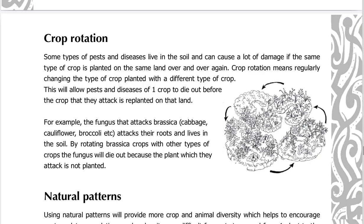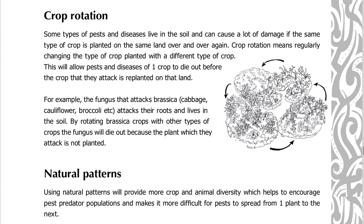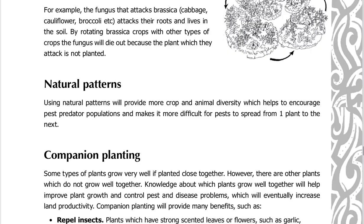Crop rotation. Some types of pests and diseases live in the soil and can cause a lot of damage if the same type of crop is planted on the same land over and over again. Crop rotation means regularly changing the type of crop planted with a different type of crop. This will allow pests and diseases of one crop to die out before that crop is replanted. For example, the fungus that attacks brassica — cabbage, cauliflower, broccoli, etc. — attacks their roots and lives in the soil; by rotating brassica crops with other types, the fungus will die out. Using natural patterns will provide more crop and animal diversity, which helps encourage pest predator populations and makes it more difficult for pests to spread.